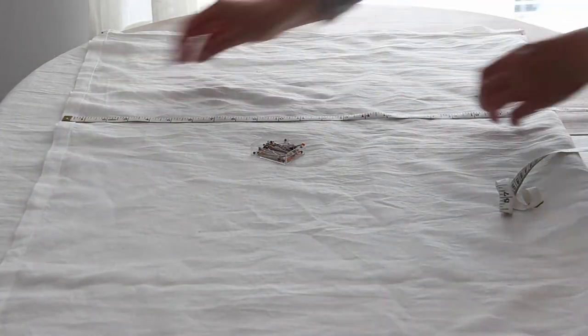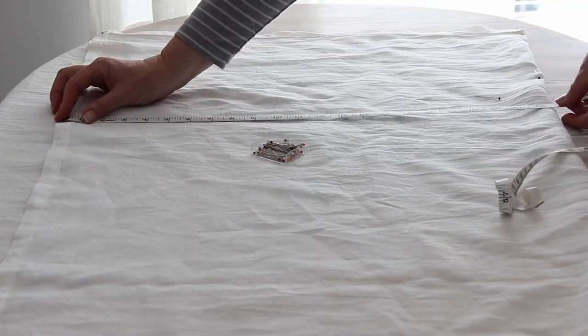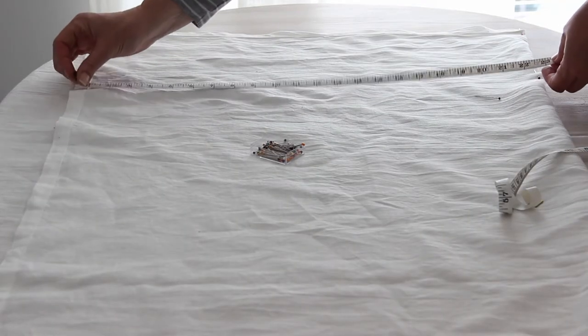Continue to make a mark all the way across the entire curtain and then join up your marks with a ruler to make a straight edge.